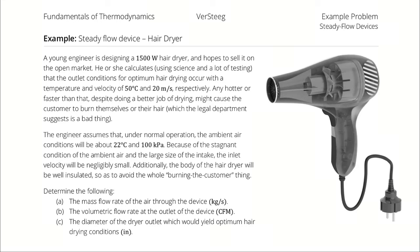A young engineer is designing a 1500-watt hairdryer and hopes to sell it on the open market. Using science and testing, the outlet conditions for optimum hairdrying occur at a temperature of 50 degrees Celsius and a velocity of 20 meters per second. Any hotter or faster than that, despite doing a better job of drying, might cause the customer to burn themselves or their hair, which the legal department suggests is a bad thing.